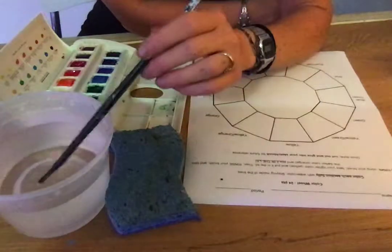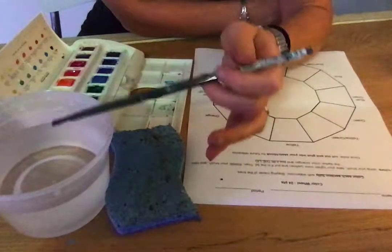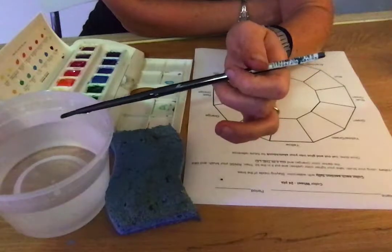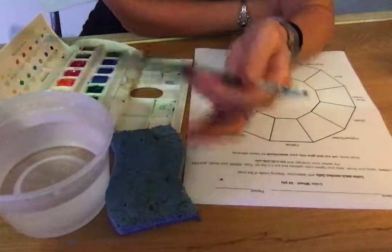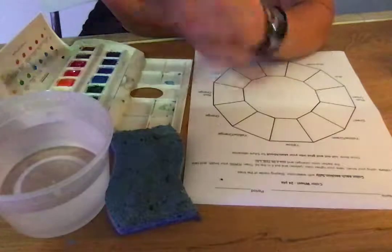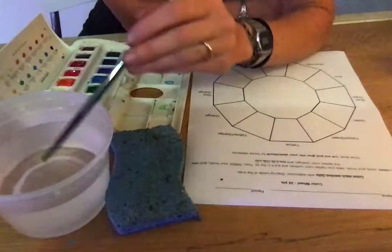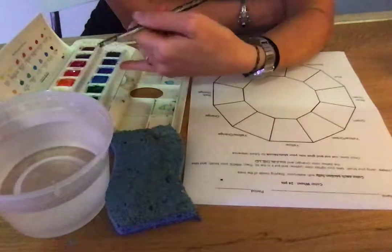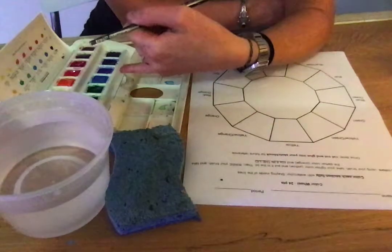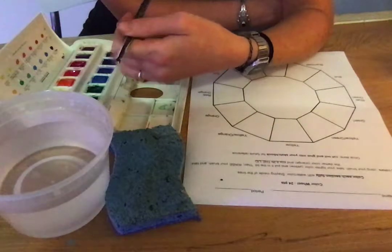So first off, if your water is super dark, you're gonna want to rinse it out and get some new water. Because if this has tons of watercolor pigment in it, it's going to then mix with the watercolors in your palette and make them brown and muddy and gross.